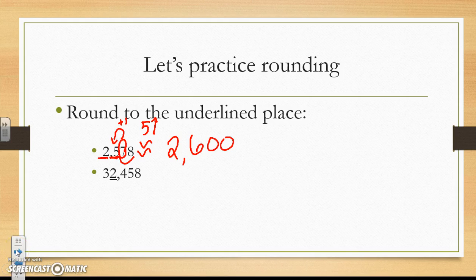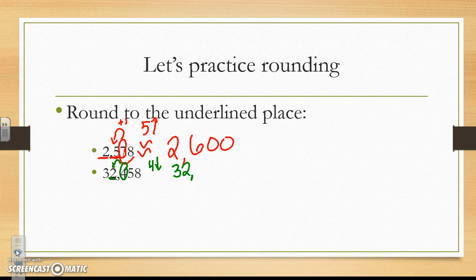Let's try another one. Here the 2 is underlined and it is in the thousands place. I am going to circle the number directly to the right. The 4 is 4 or lower, so the 2 stays the same. The 3 in the ten thousands place also stays the same, and the rest of my numbers from the circled number on become zeros. So 32,458 is approximately 32,000.